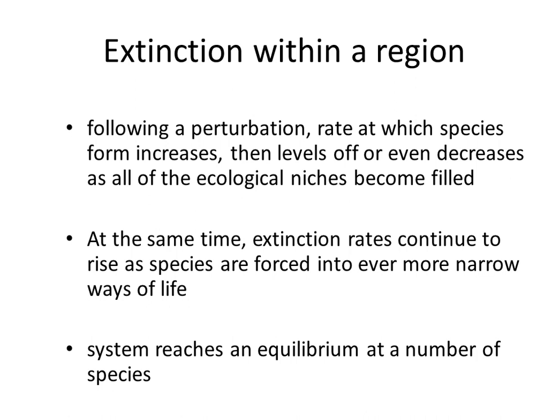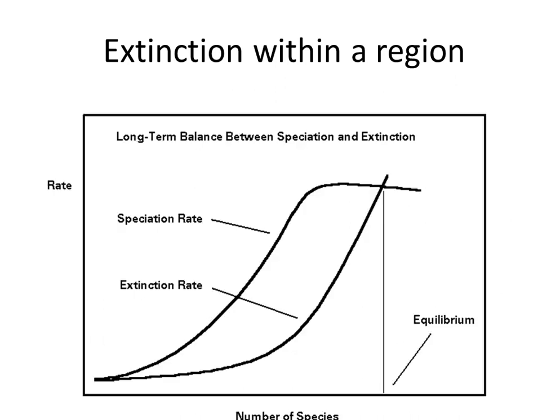Extinction within a region happens following a perturbation. The rate at which species form increases, then levels off or even decreases as all the ecological niches become filled. At the same time, extinction rates continue to rise as species are forced into ever more narrow ways of life. The system reaches an equilibrium at a certain number of species. On this graph you see the rate versus the number of species, showing the extinction rate, the speciation rate, and where they come together is the equilibrium.